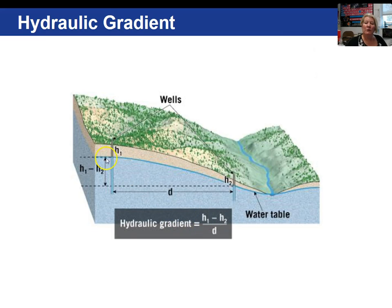The slope or hydraulic gradient of the water table is calculated by taking the height of the water table at position 1 (H1), subtracting the height at H2, and then dividing by the distance between H1 and H2.